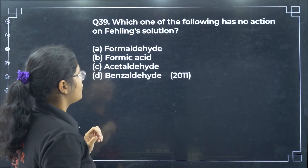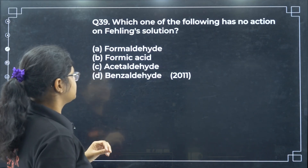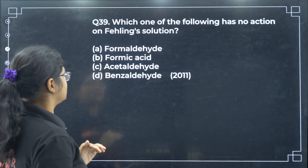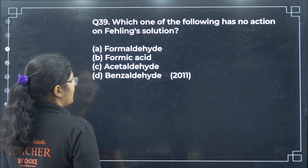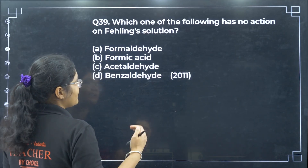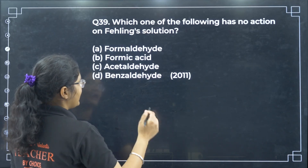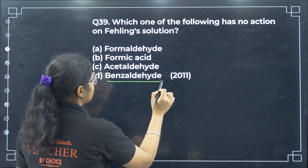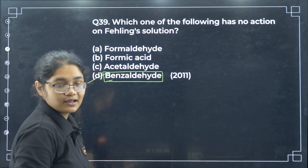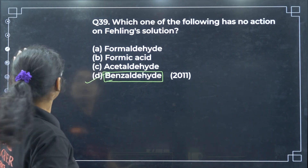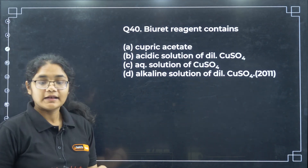Which one of the following has no action on Fehling's solution? Aromatic aldehydes do not give a positive Fehling's test, so benzaldehyde will not react — option D.